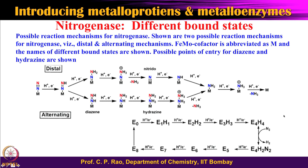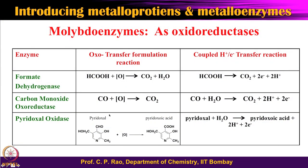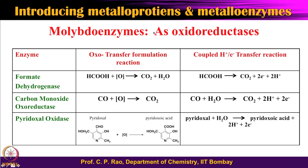Nitrogenase is a very complex enzyme. To summarize: we started with the iron protein and the molybdenum iron protein, examined the iron-sulfur cluster, P cluster, and molybdenum iron cofactor, and found that MgADP/ATP hydrolysis triggers the conformational change driving electron transfer to the catalytic center. We will now switch to molybdenum enzymes in the oxidoreductase class.